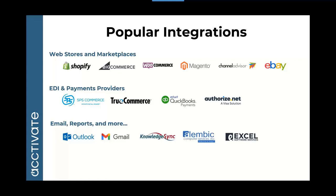What this looks like is, when we are talking about bringing in orders from Shopify, those would come in from Shopify to Activate. Once those orders are in Activate and loaded through, you've got the fulfillment side done. Then those orders will go into Starship to be shipped and then sent back into Activate.